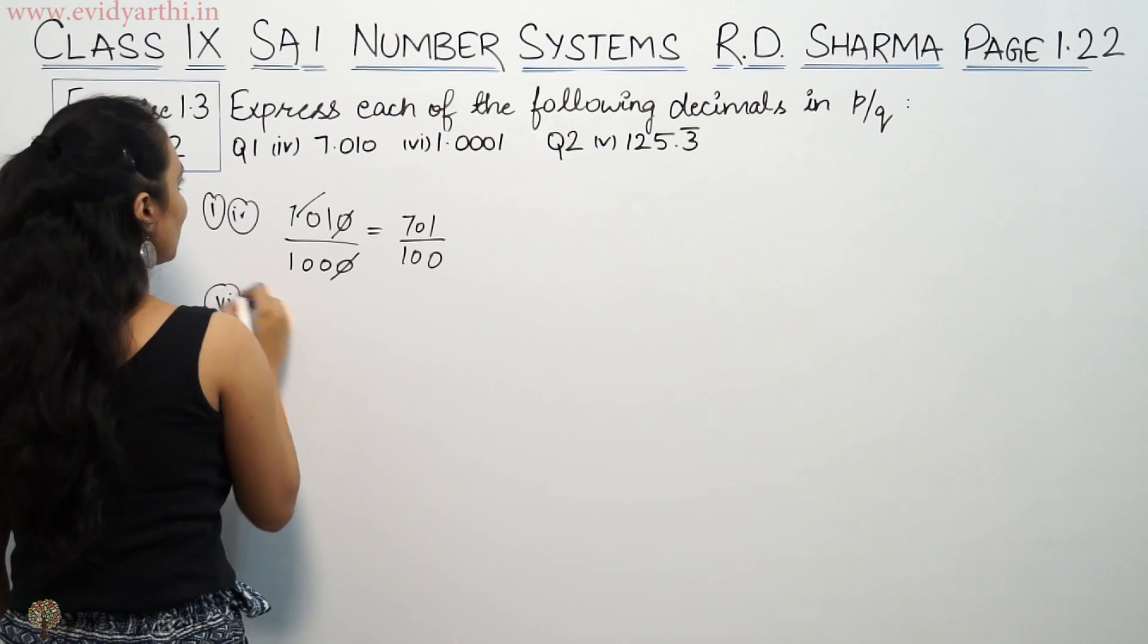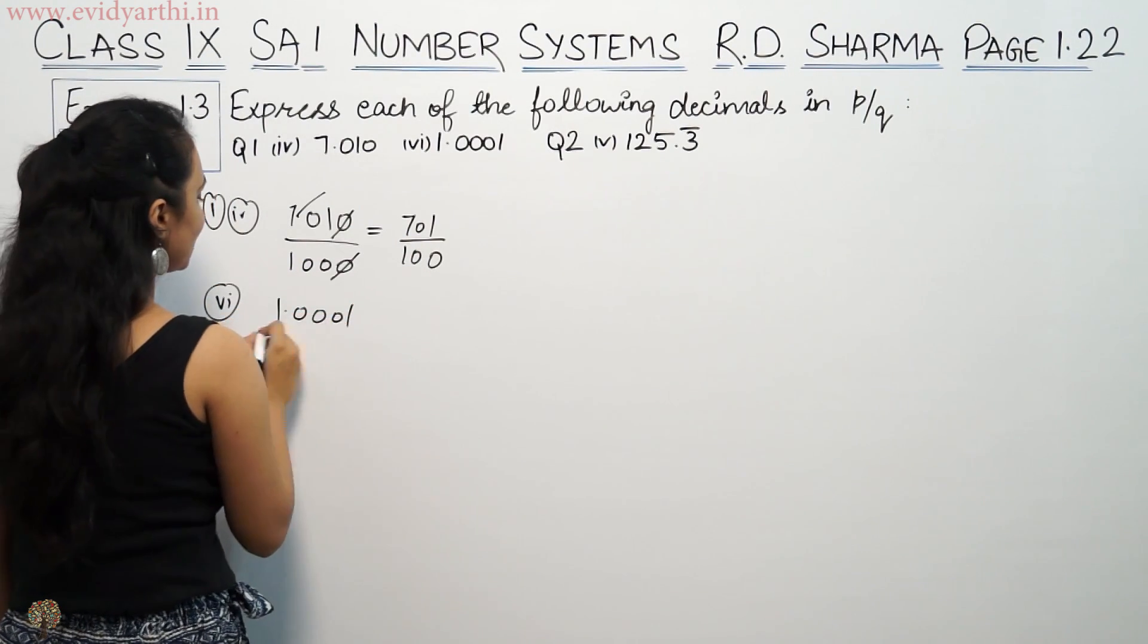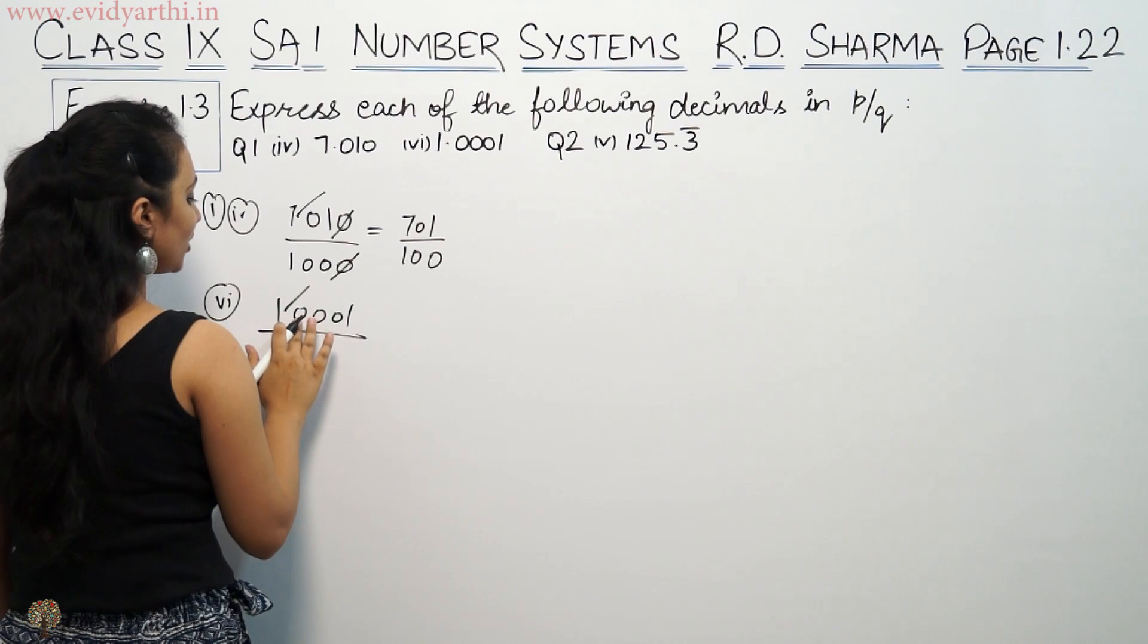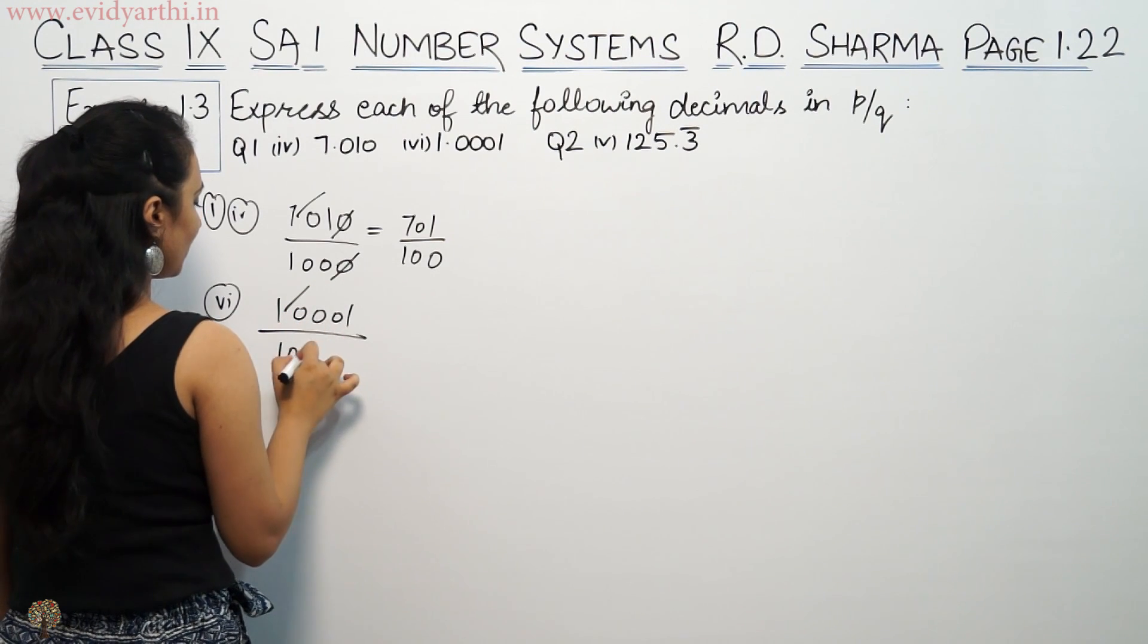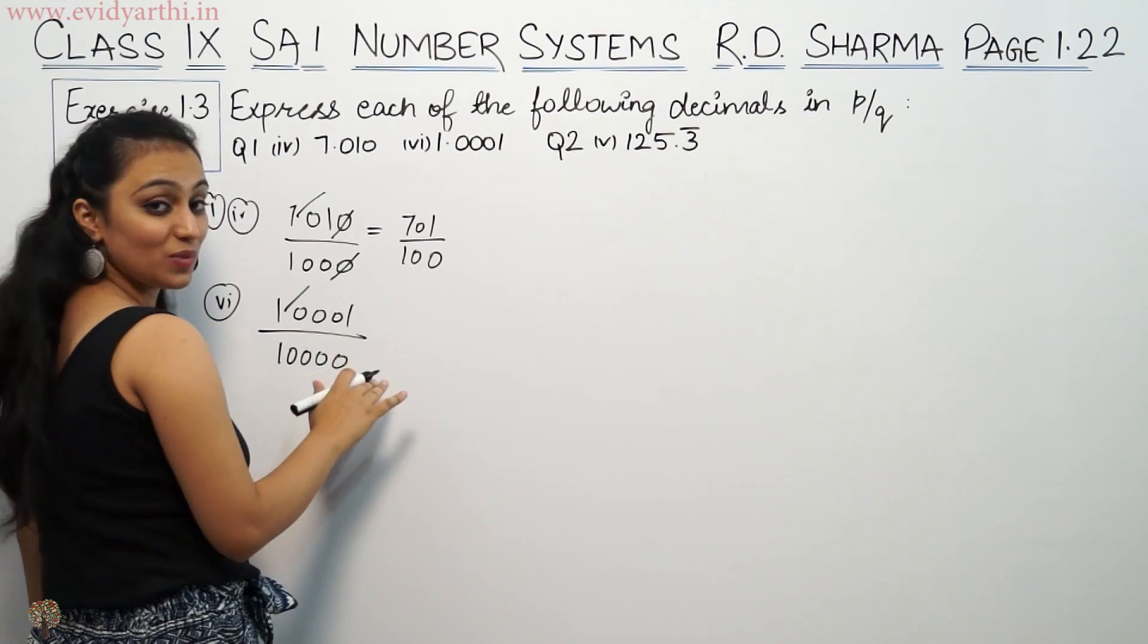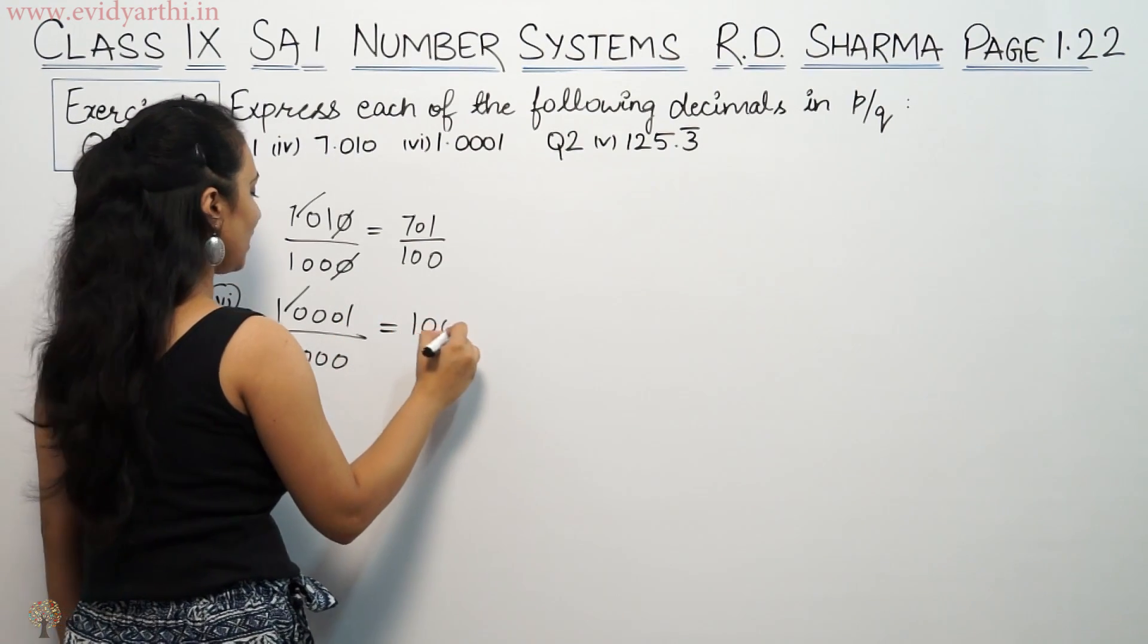Now part 6, which is 1.0001. If we remove the decimal, there are 1, 2, 3, 4 places, so this is 10001 by 10000. Here we can't cancel anything, so this will remain as is.